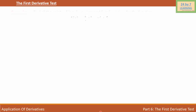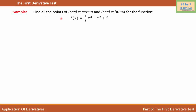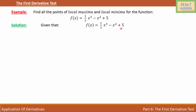First derivative test example: find all the points of local maxima and local minima for the function f(x) = (1/3)x³ - x² + 5. As you can see, it is given that f(x) = (1/3)x³ - x² + 5.